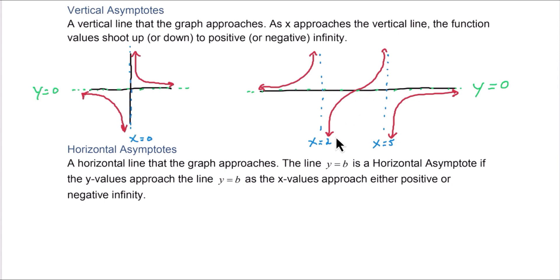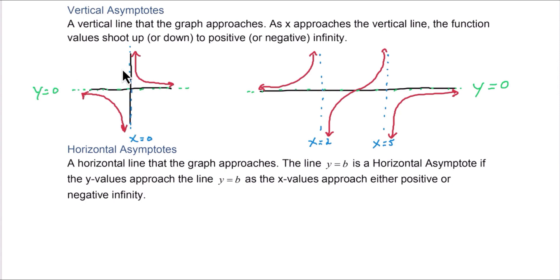Note that a horizontal asymptote can be crossed. For example, here the horizontal asymptote is being crossed in the middle, but on the far left and far right ends, the function is approaching 0. So it's possible to cross a horizontal asymptote, but you're never going to cross a vertical asymptote.